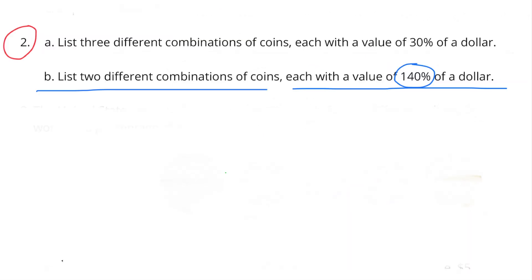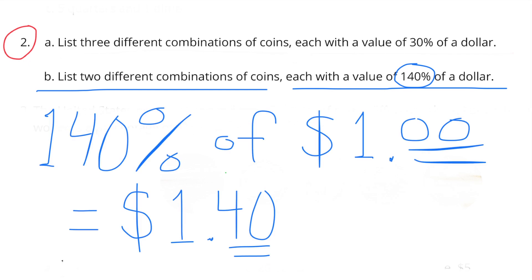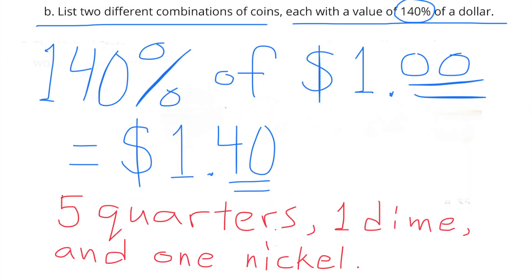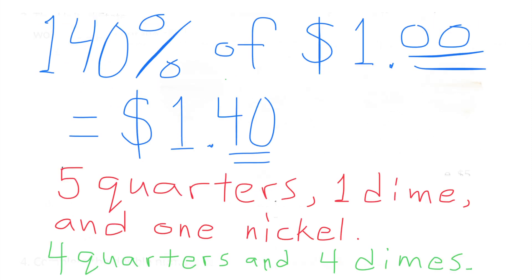B. List two different combinations of coins, each with a value of 140% of $1.00. 140% of $1.00 is $1.40. $1.40 can be represented by five quarters, one dime, and one nickel. Another way $1.40 can be represented is four quarters and four dimes. Remember, there are many ways to represent $1.40 — these are just two of them.